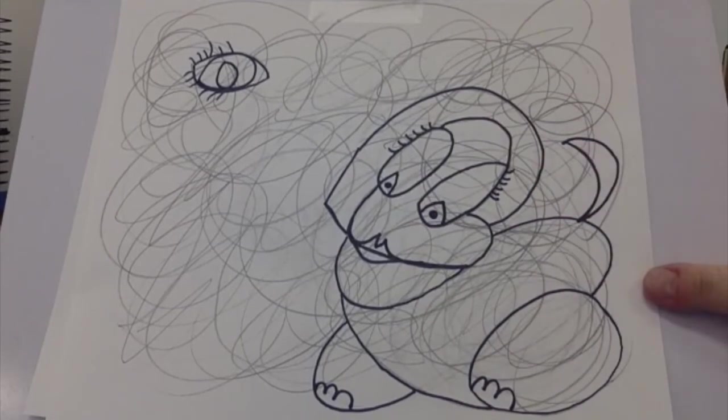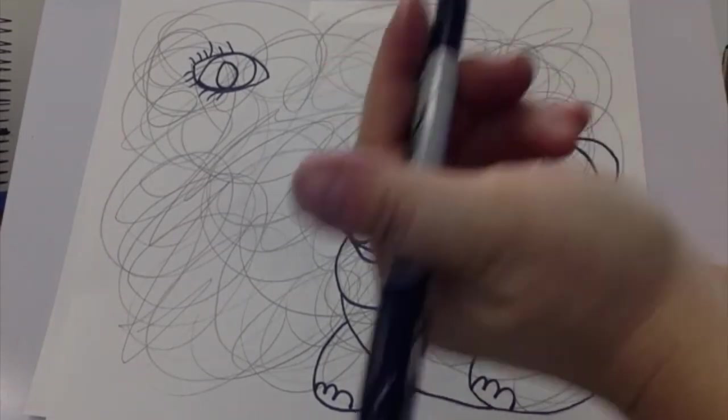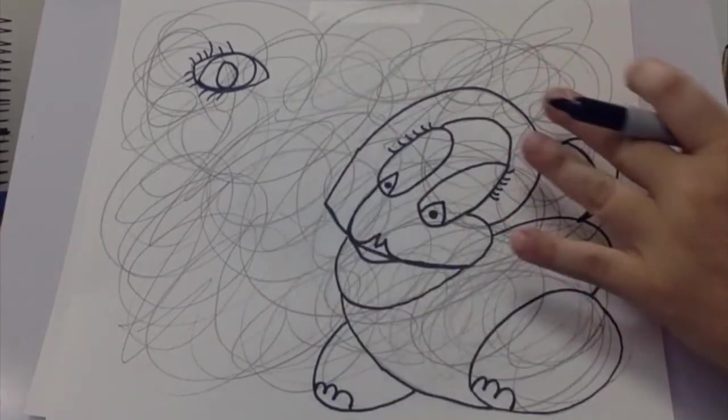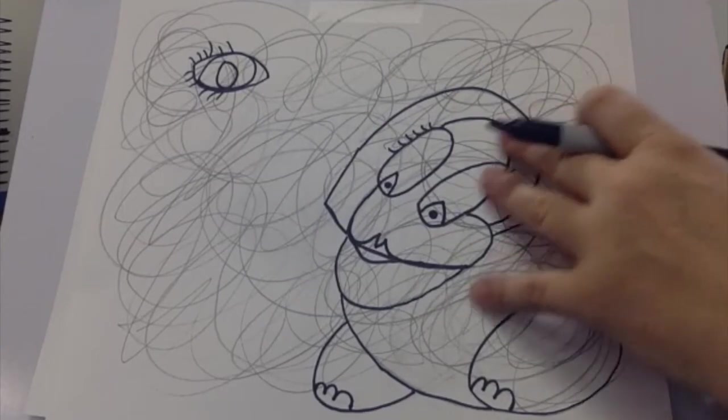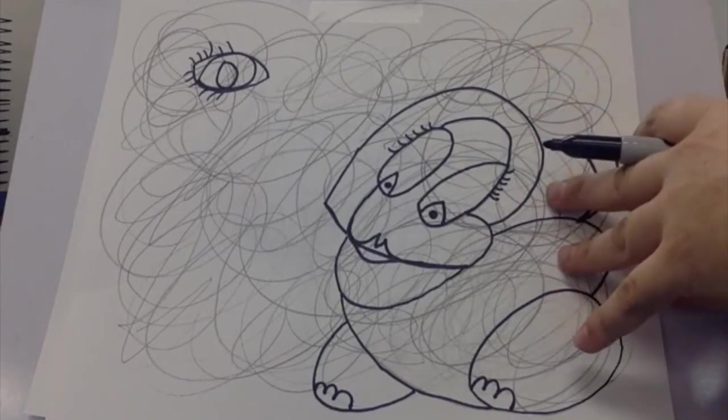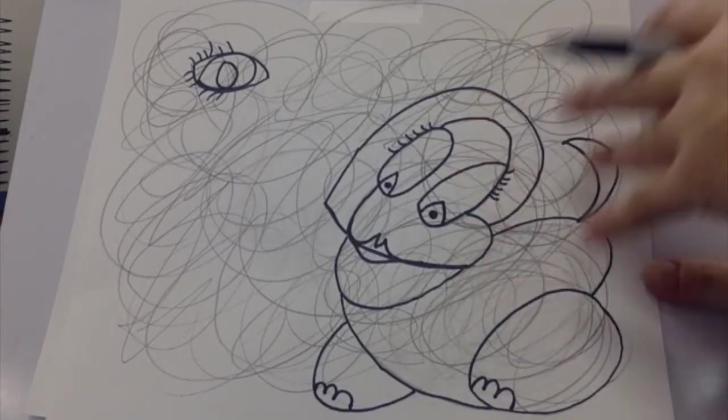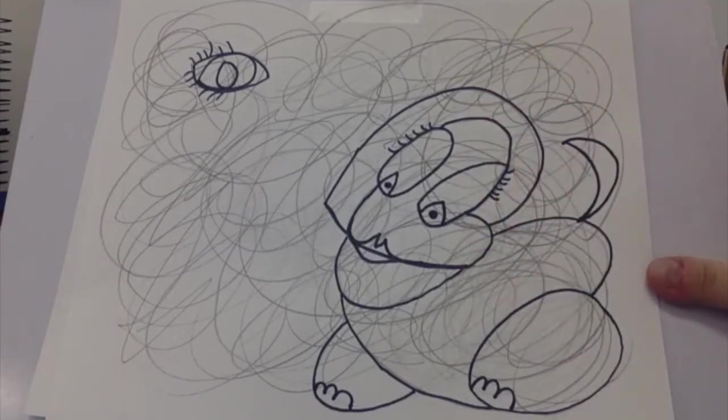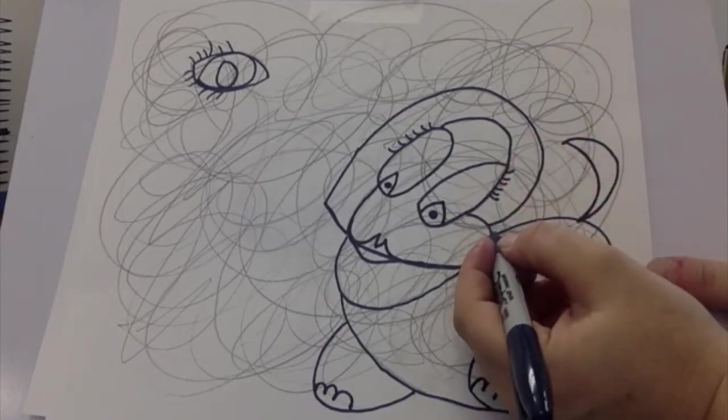Once they're done finding their images and tracing them with the permanent marker, then I have them go ahead and add color with, depending on the age group, crayons, colored pencils.